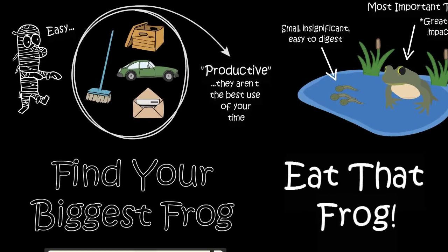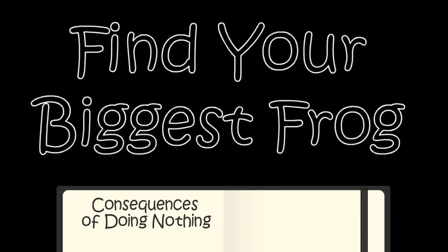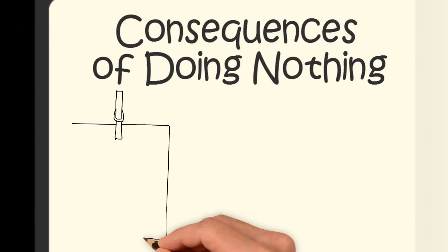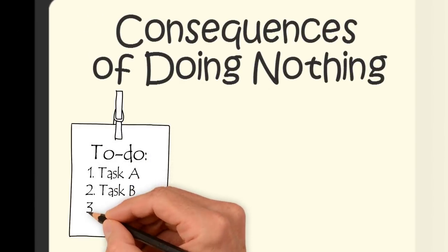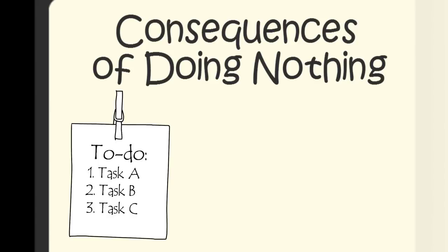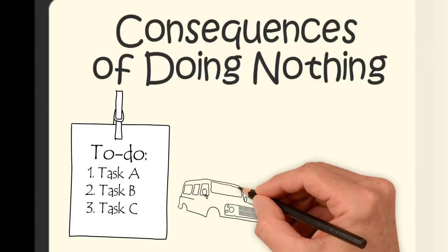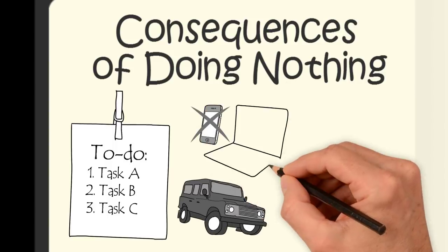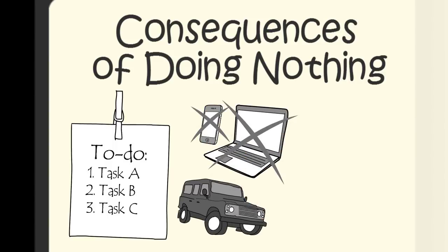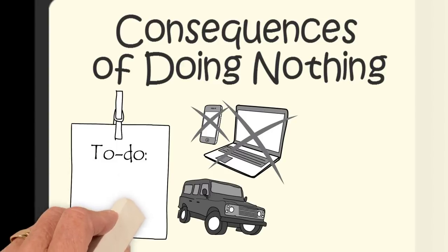The first step to finding your biggest frog is considering the consequences of doing nothing. Gather a list of everything you could do, should do, or ought to do. Now imagine doing nothing on that list for an entire week. Imagine you went for a long drive across the country without a phone or a computer. What are the long-term consequences of doing nothing on that list?